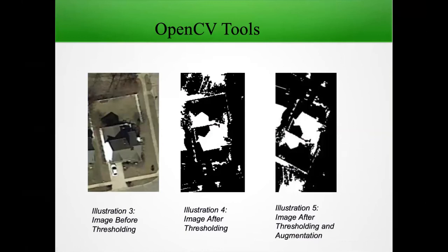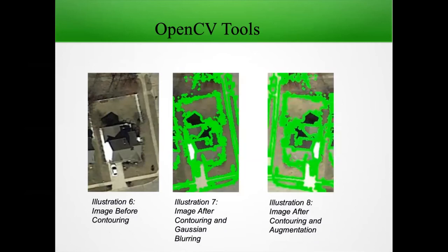So here's an example of thresholding. As you can see, some of the pixels turn black, some of the pixels turn white depending on the threshold of that intensity pixels that match. Here's a good example of contouring. As you can see, it tries to match the contouring over the pictures.